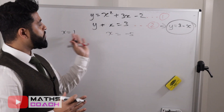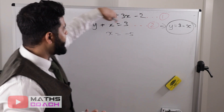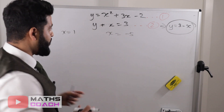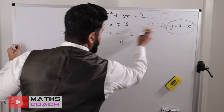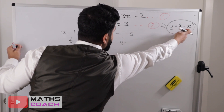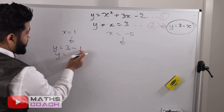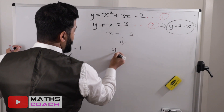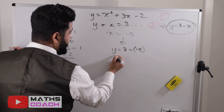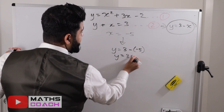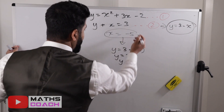To find the corresponding y values, I'll substitute both x values into the simpler linear equation. I'll use the rearranged form: y equals 3 minus x. For x equals 1: y equals 3 minus 1, which is 2. For x equals minus 5: y equals 3 minus minus 5, which is 3 plus 5, so y equals 8. So when x equals 1, y equals 2; when x equals minus 5, y equals 8.